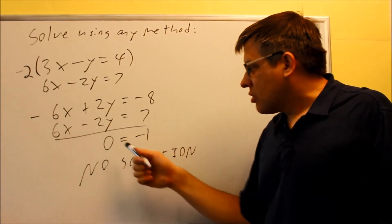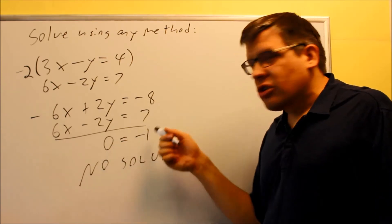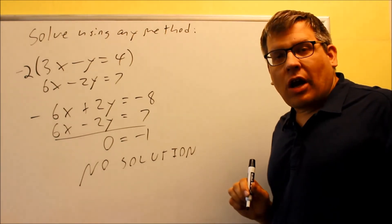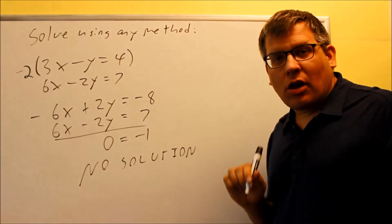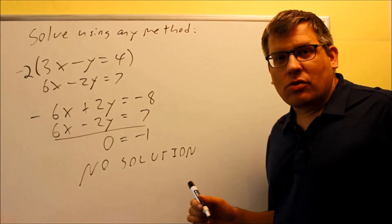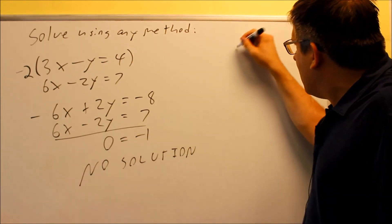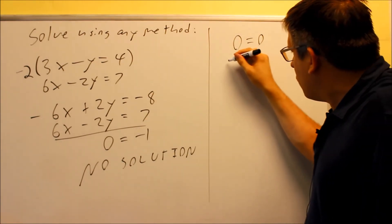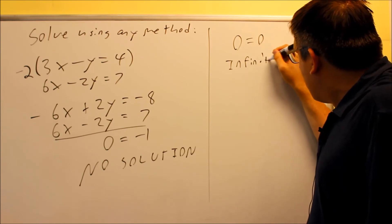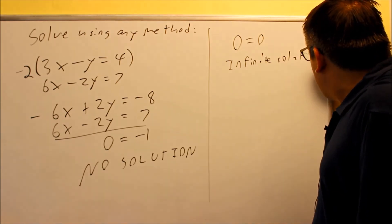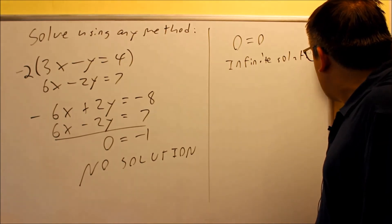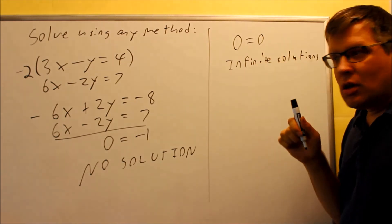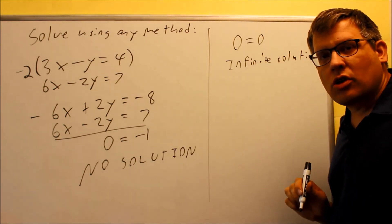If you get a result where two equal numbers appear — like 0 equals 0, or negative 1 equals negative 1, or 7 equals 7 — that means you have one line drawn on top of the other, which is a case of infinite solutions. So to summarize: if you get a false statement, the answer is no solution (parallel lines). If you get a true statement like 0 equals 0, everything cancels and the answer is infinite solutions.